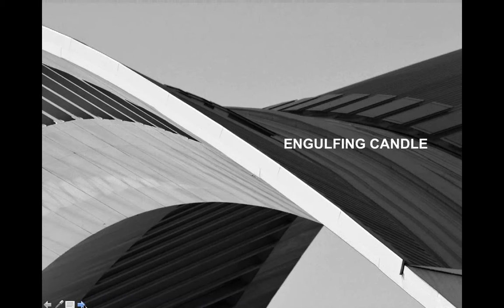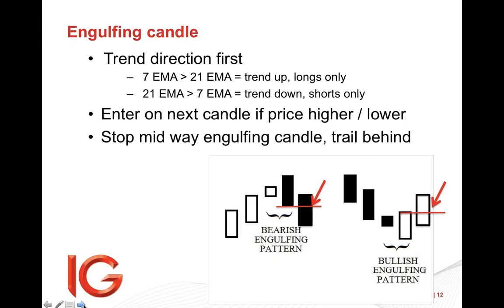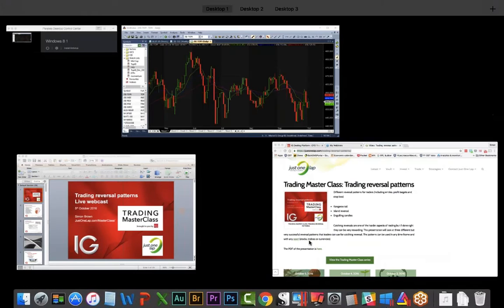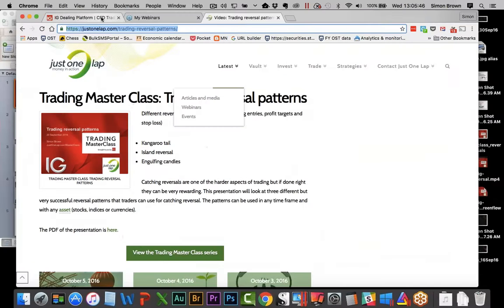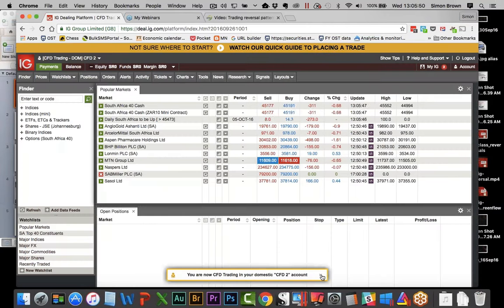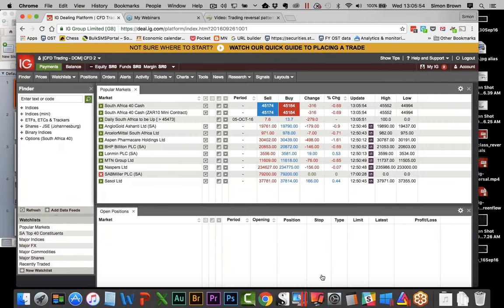Moving on to engulfing candles - a quick reminder of what one looks like. We don't worry about the wicks. The body of the candle literally engulfs the previous body. The low of that candle is your entry, so you'd be entering at that level. In a reversal to the upside, we've been going down, we get that candle which gives the full body engulfing, and the red line is your entry. I add a direction trend filter: if the 7 EMA is above the 21 I'll take longs only, and if below then shorts only.